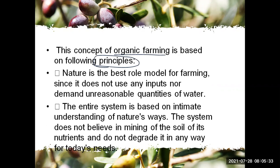Nature is the best role model for farming since it does not use any input, nor demand unreasonable quantities of water. There is a fact that the farmer has rain, because rain has 16 types of micro and macronutrients present. There are 16 types.